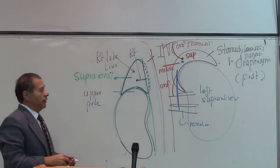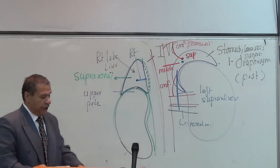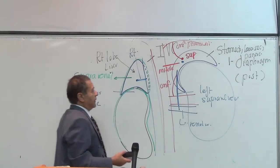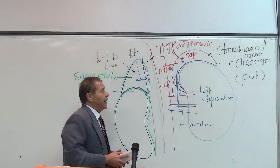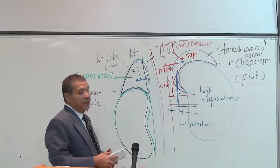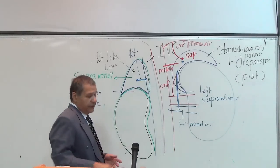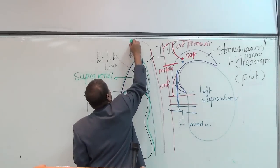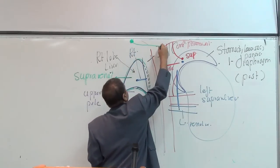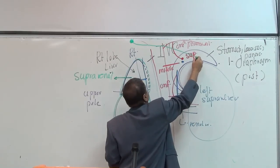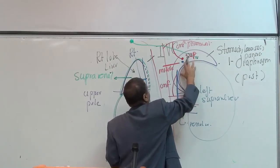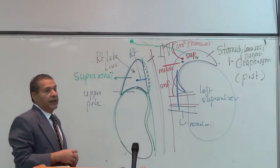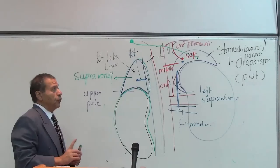That is the arterial supply and venous drainage of the suprarenal gland. The suprarenal gland is supplied by sympathetic nerve fibers. The behavior is like a sympathetic ganglion — it receives pre-ganglionic fibers, not post-ganglionic.